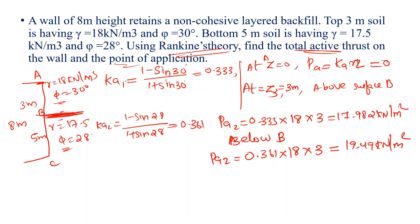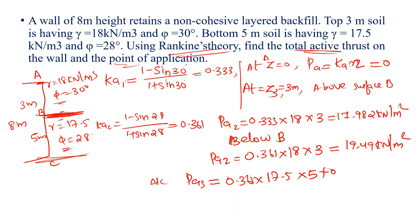At the interface we consider values above and below using corresponding K values. At point C, which is the bottom, using K2 equals 0.36 into gamma equals 17.5 into z equals 5 meters, we get the pressure at the base.